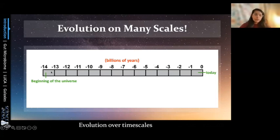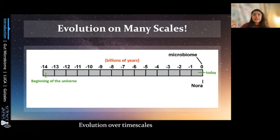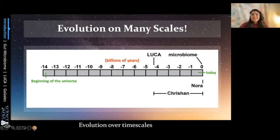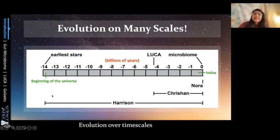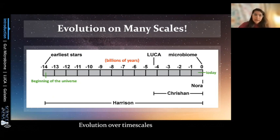Nora's talk starts us off with changes in gut bacteria, which happen over weeks to months — very quick changes. Next, Krishan will talk about phylogenetics and how all species relate back to the last universal common ancestor, thought to be about 4 billion years old. Then Harrison will discuss the evolution of stars and galaxies, covering changes over millions and millions of years — with the earliest stars thought to exist about 13 billion years ago. So this is a wide range of timescales, from weeks to billions of years.